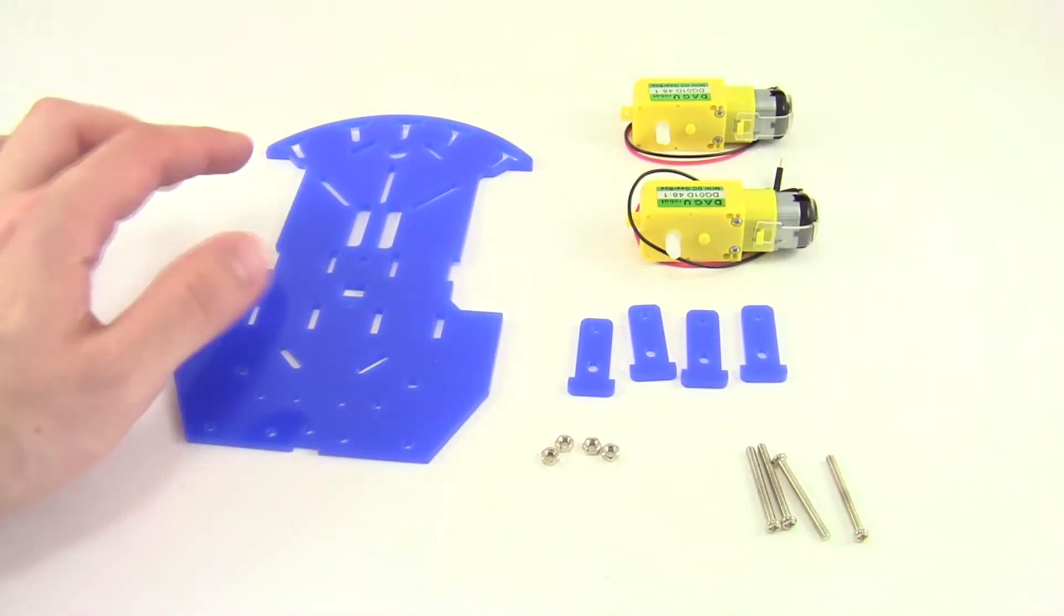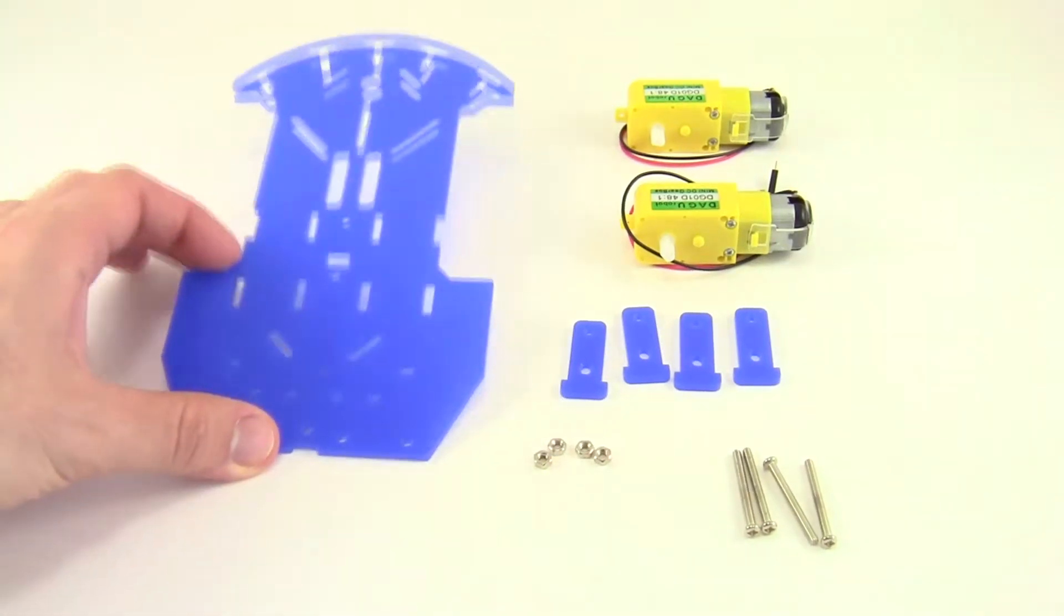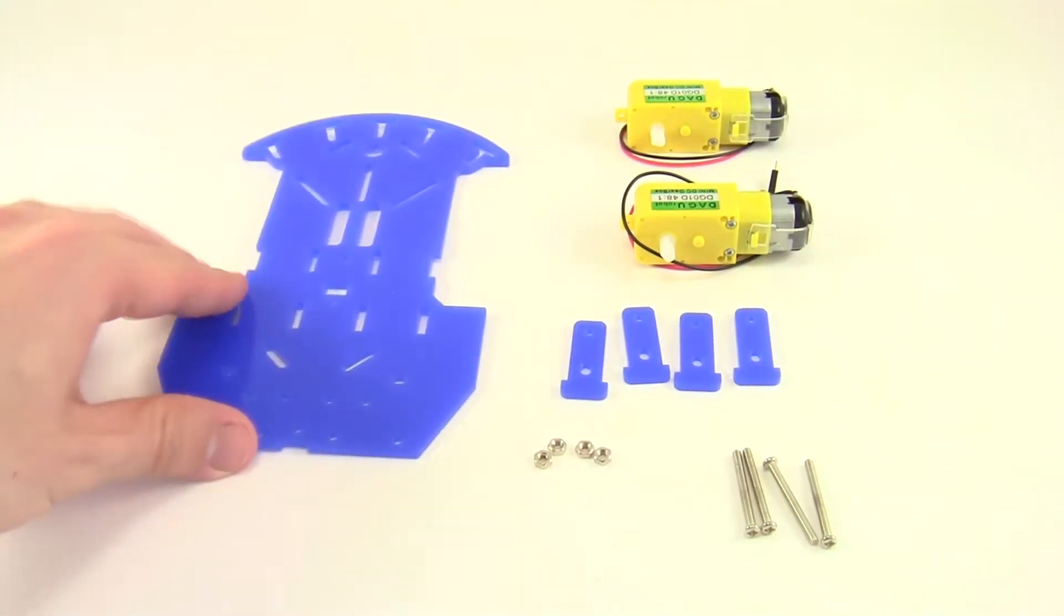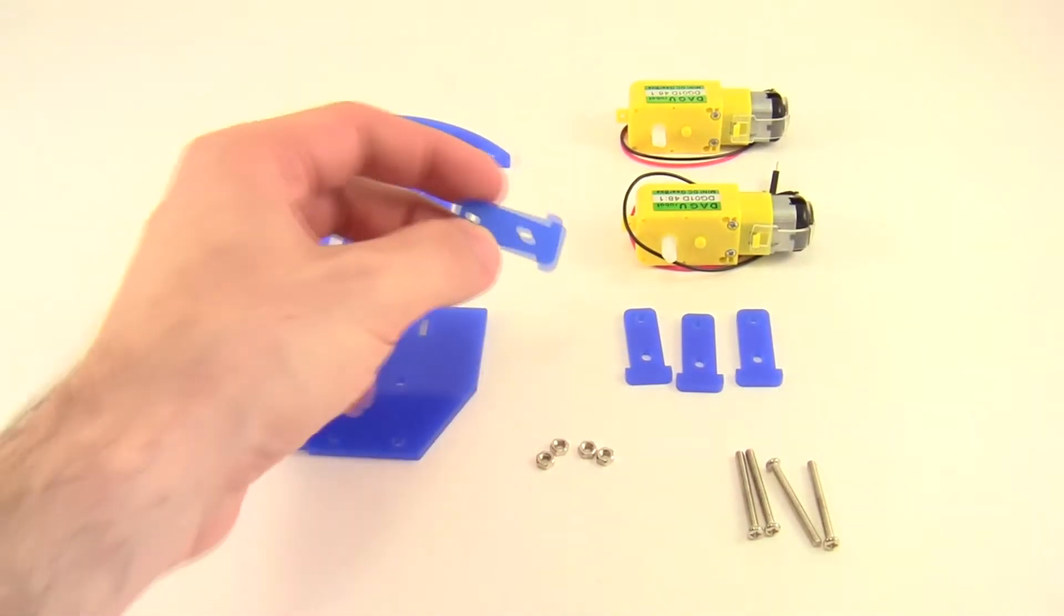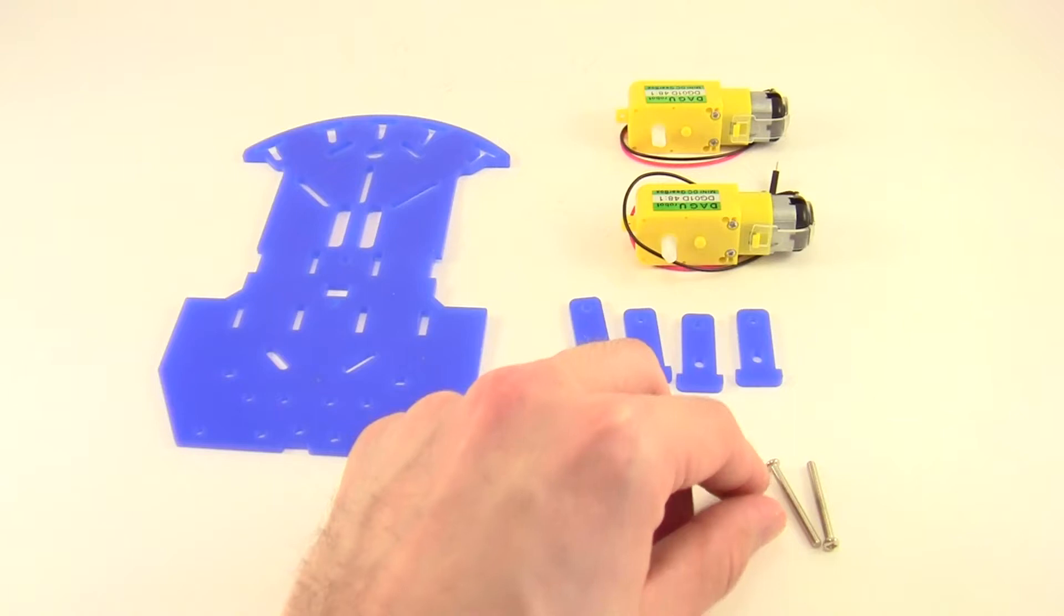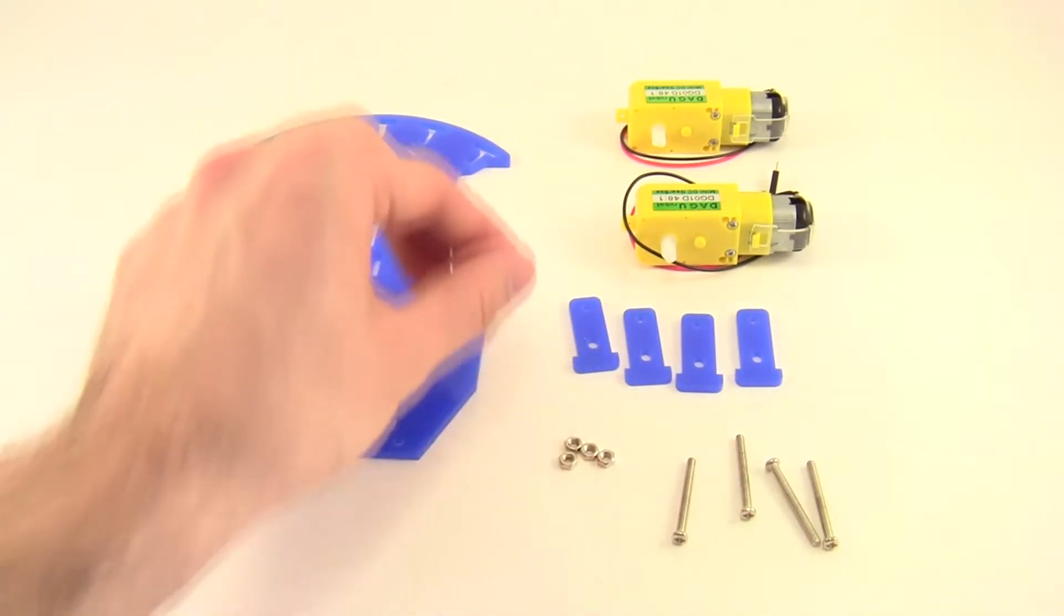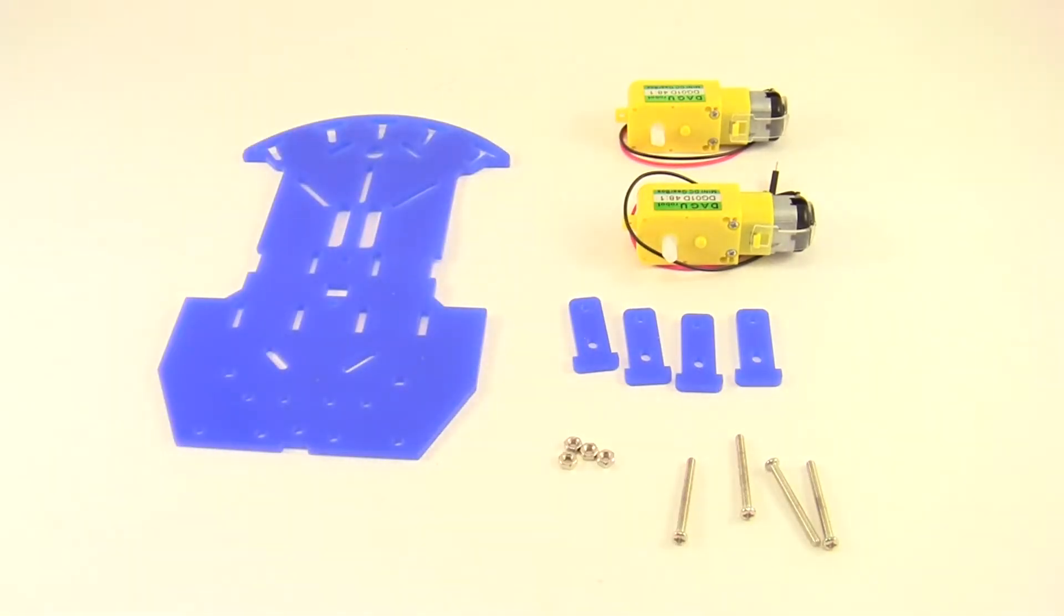So to start assembly, you will need the bottom plate, which is this large blue piece of plastic. You will need these four small plastic T-shaped connectors. You will need the four long screws and corresponding four small hex nuts. And finally, you will need the two yellow motors.